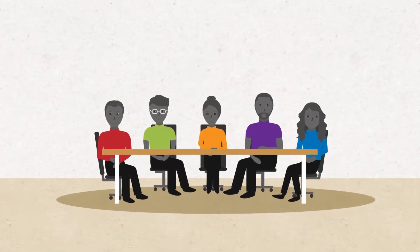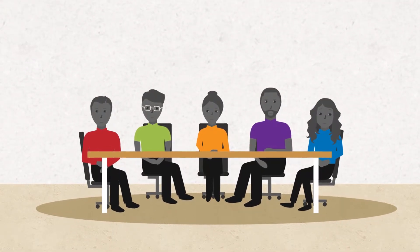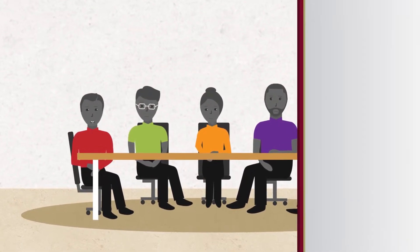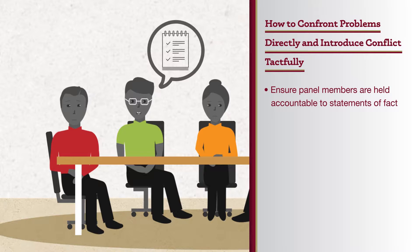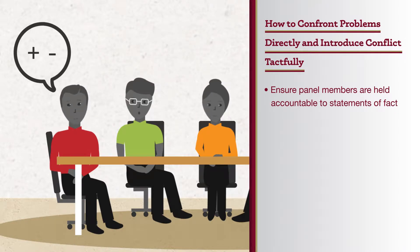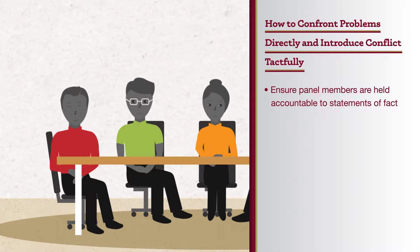The first step in effective communication is to confront problems directly and introduce conflict tactfully. Ensure that panel members are held accountable to their statements of fact. Panel members should cite high-quality systematic reviews when available, be forthcoming about negative and positive findings, and say whether the research made comparisons among relevant interventions.